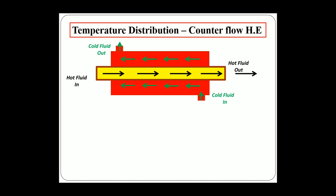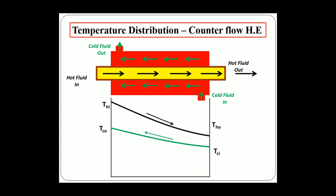Similarly, you can see the temperature distribution for counter flow heat exchangers, where fluids move in opposite directions. The black line represents the drop in temperature as the hot fluid loses heat. The cold fluid enters at the right end at temperature T_ci and increases as it flows in the opposite direction, gaining heat from the hot fluid. This is the temperature distribution of counter flow heat exchangers, which is required for analyzing heat exchangers.